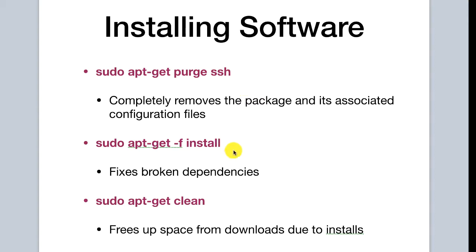Sometimes, when we are installing or uninstalling packages, we run into an issue where we have broken dependencies. To fix this, we can run sudo apt-get -f install, and this will fix the broken dependencies for us.